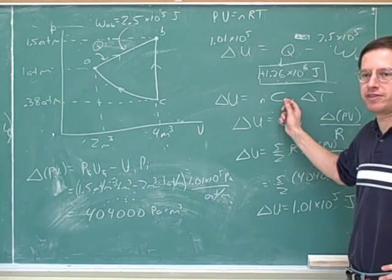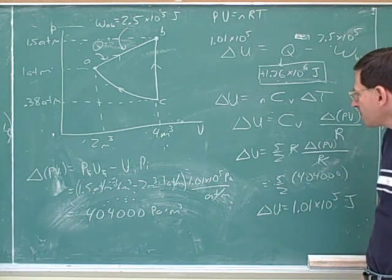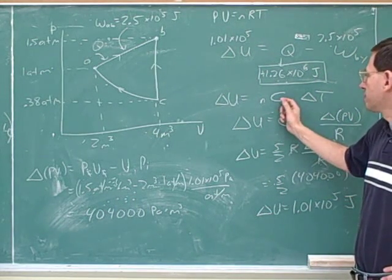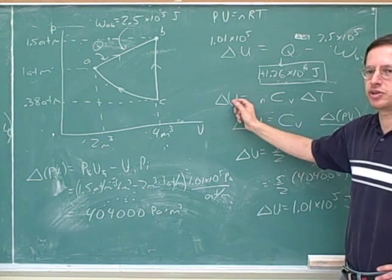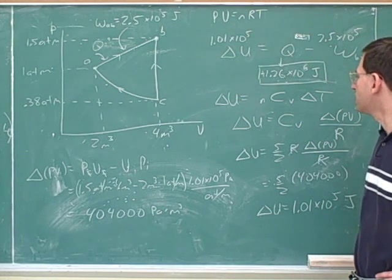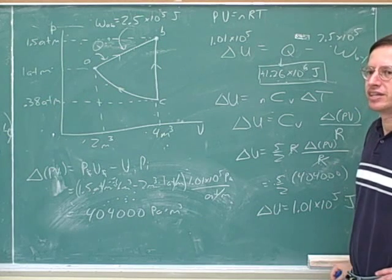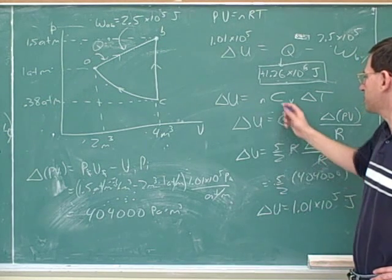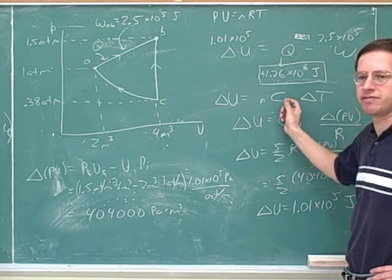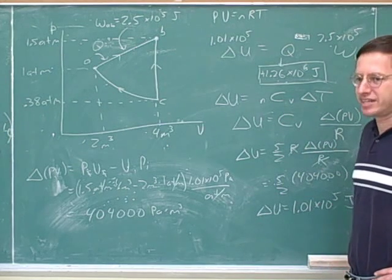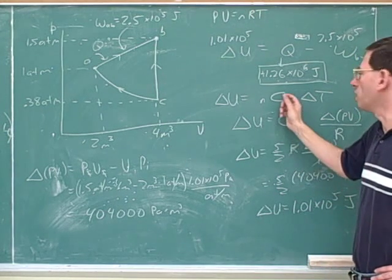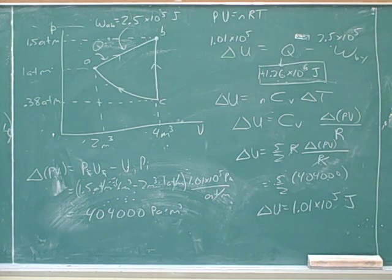And one thing that we talked about last time again was the formulas that involve C sub V and C sub P. So we saw that this is a formula that we can use to find the delta U in any situation. We saw it's confusing because if you wanted to find heat, you can only use C sub V to find heat for a constant volume process. But if you want to find energy, you can always use C sub V. That's a little bit confusing.